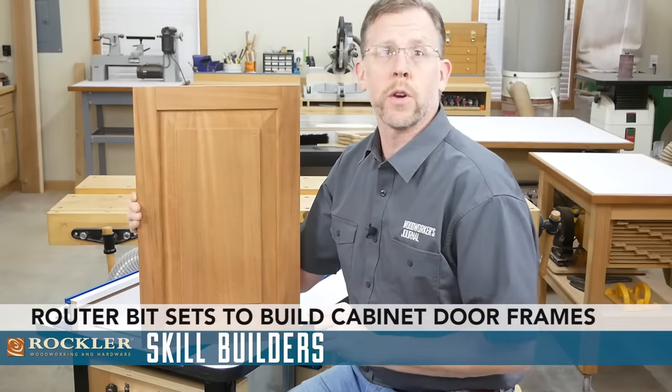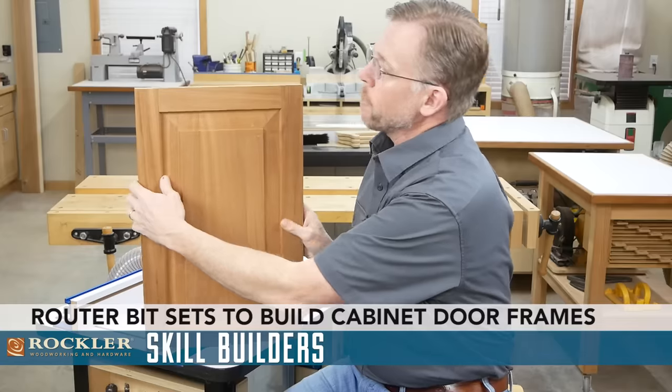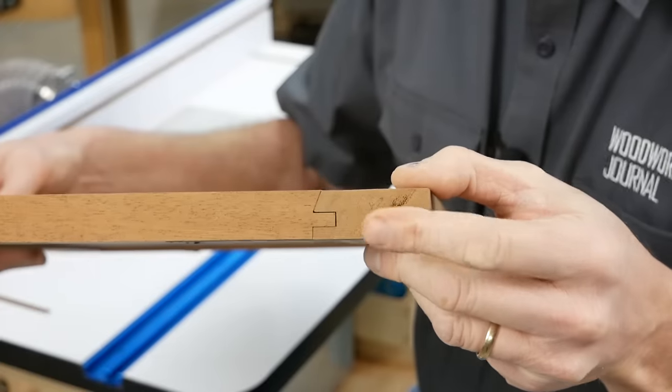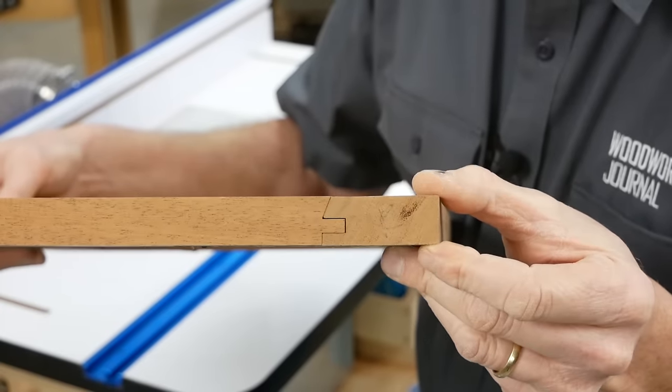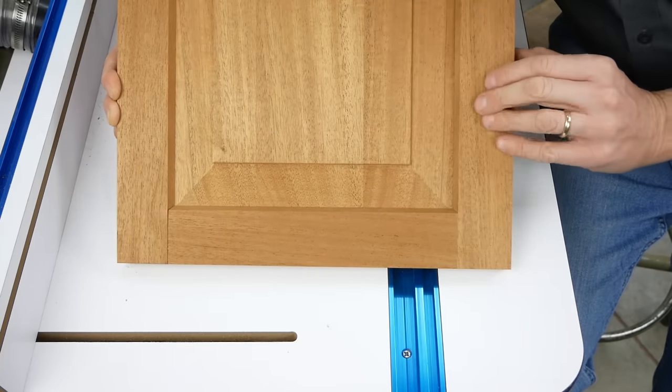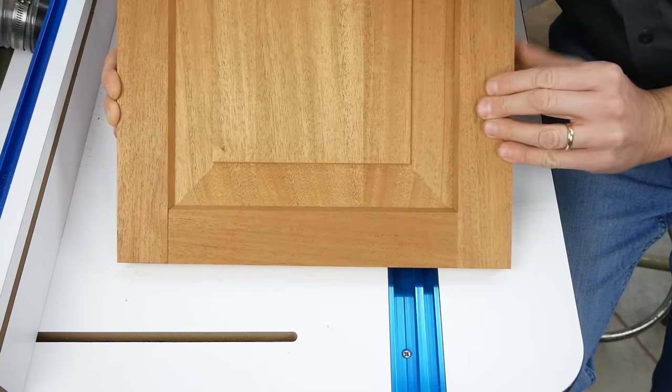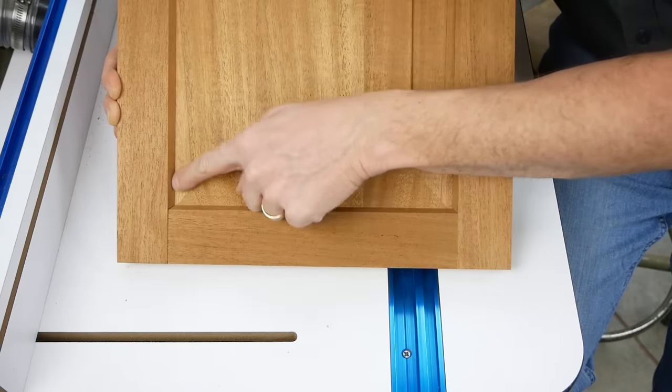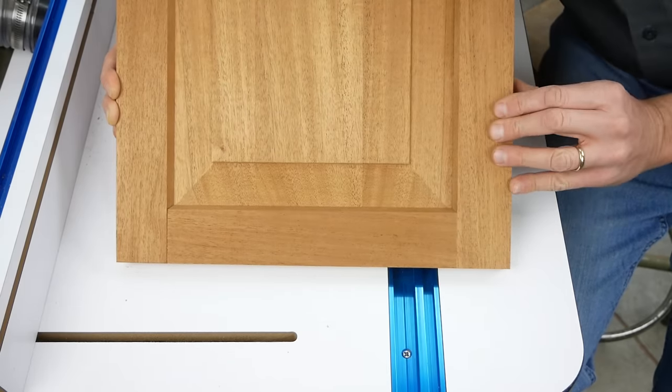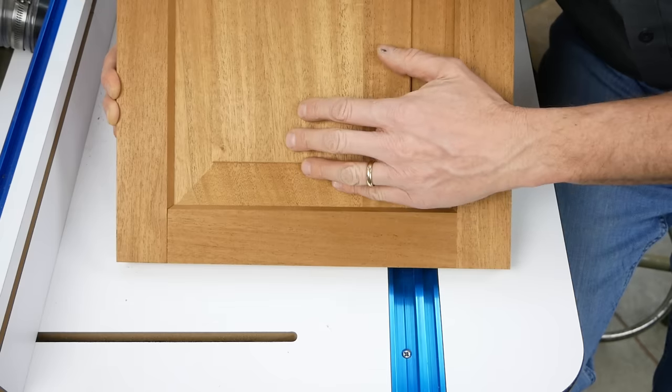Most cabinet doors, especially those made in a factory, have frames made with interlocking joints that look like this. As part of that joinery, there's a decorative profile here that dresses up the look of the cabinet door from the front. Behind this profile, there's a groove cut all the way around the inside edges of the frame to accept a solid wood panel like this, a piece of plywood or glass.